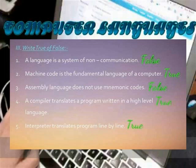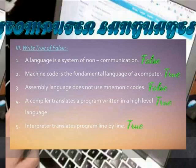Assembly language doesn't use mnemonic code — False. A computer translates a program written in high-level language. An interpreter translates a program line by line — True.